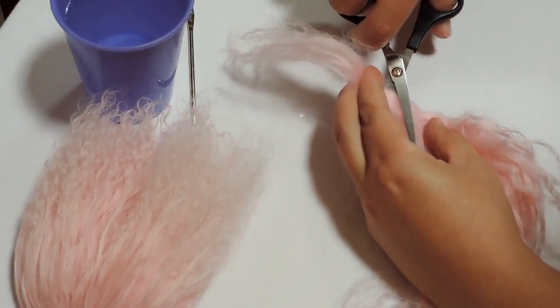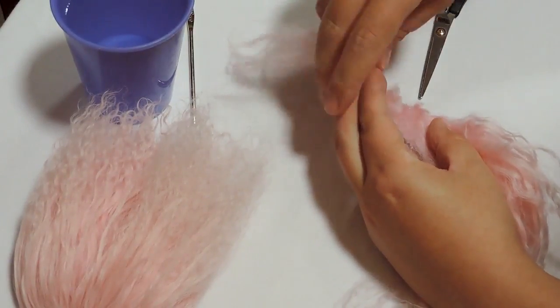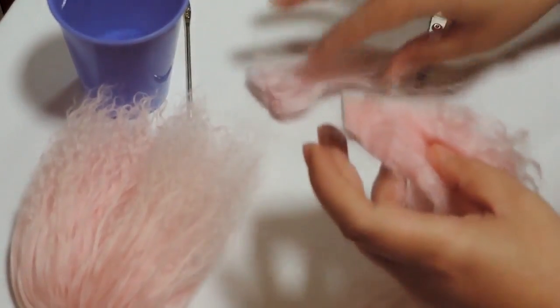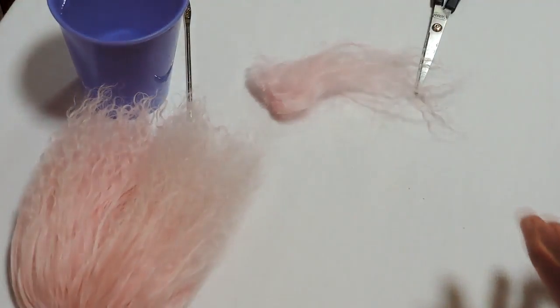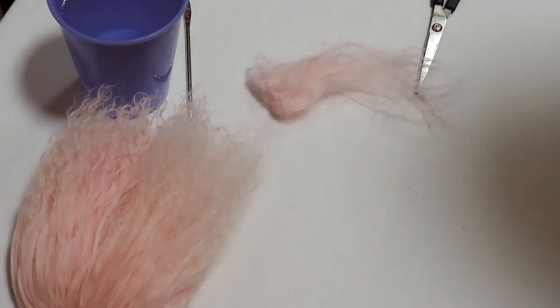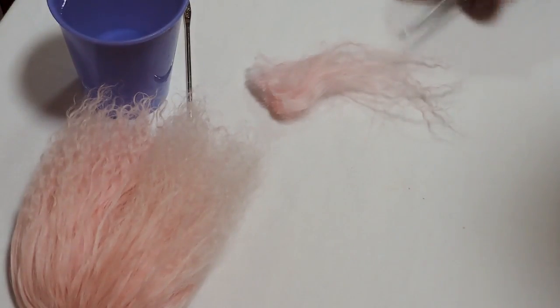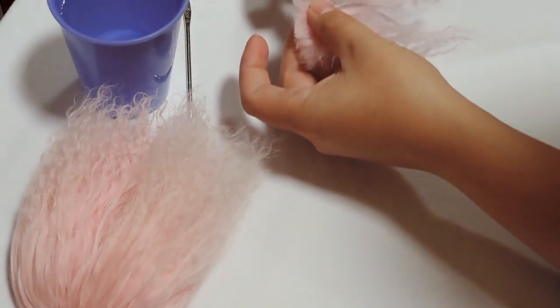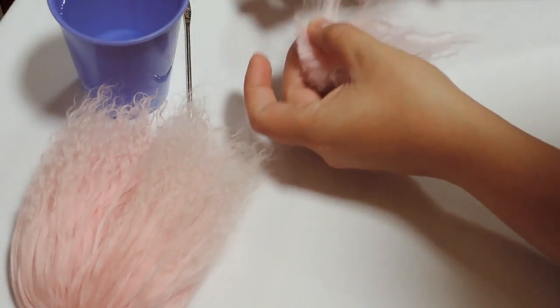So when I'm ready, I just cut off a small amount that I'm going to use and set aside the rest. So I take this bit and I just pull off very thin pieces.